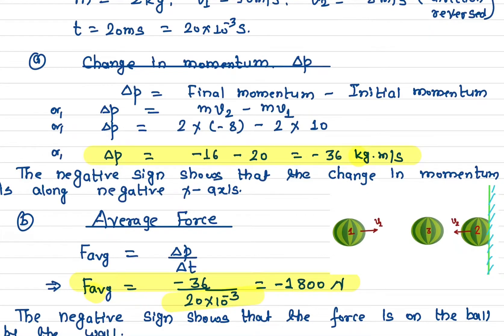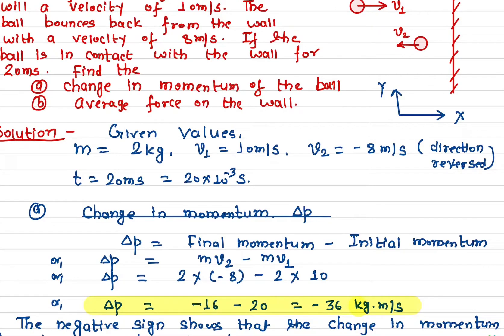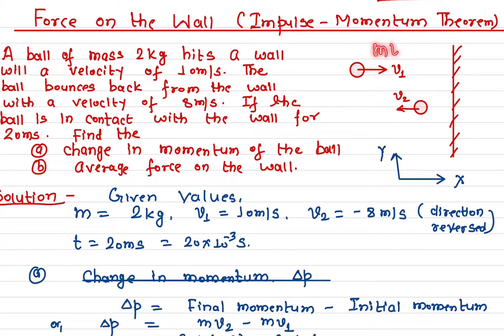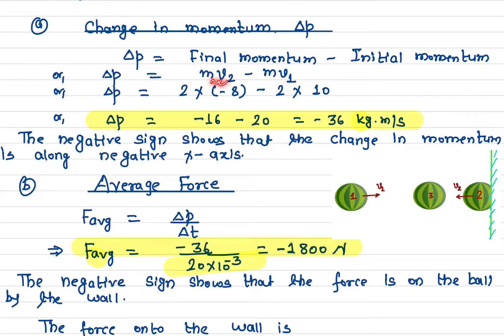Now let's find the change in momentum. Change in momentum means final momentum minus initial momentum — final is after the ball bounces back, initial is before. So it's m times V2 minus m times V1: 2 times negative 8, minus 2 times 10. The change in momentum is negative 36 kilogram meters per second. The negative sign tells you that the final momentum is smaller than the initial, or the direction is along the negative x-axis.